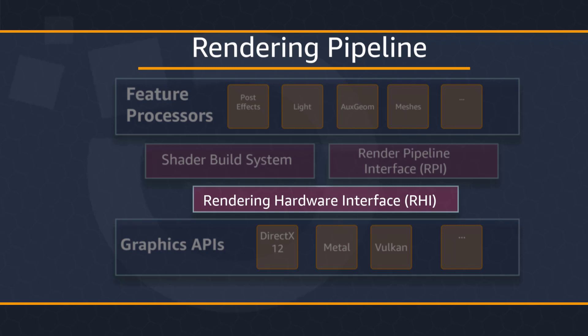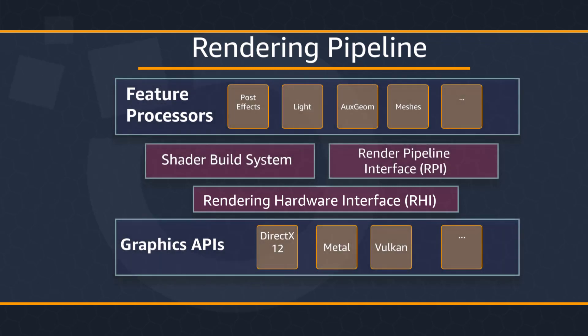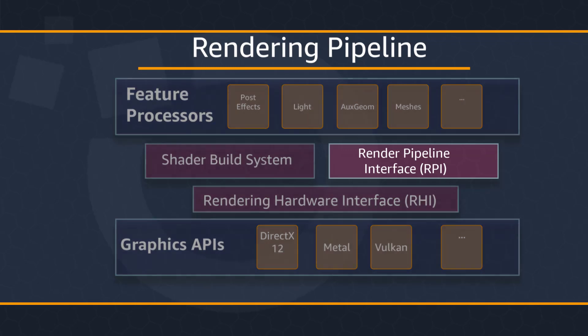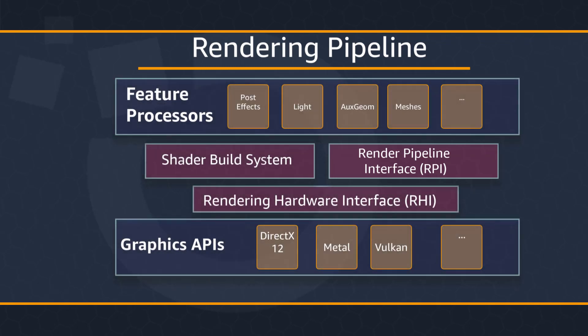At the lowest level of the pipeline, we have the Rendering Hardware Interface, or RHI, which is the layer that communicates with all the graphic APIs and hardware abstractions. On top of the RHI is the Rendering Pipeline Interface, or RPI, which is the platform-independent layer that renderer engineers will interact with most. The benefit of this design is that engineers don't need to be concerned with platform details as they build out new features. Instead, they can just focus on making great graphics regardless of the platform.